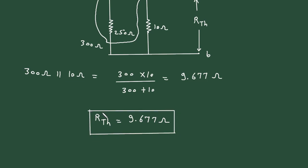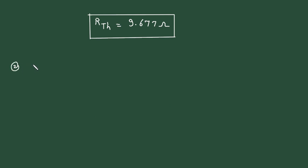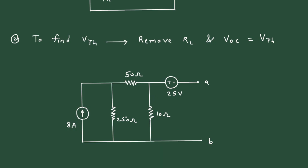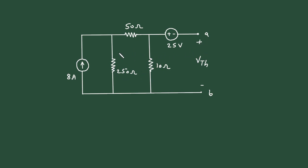Step number 2: we have to find the value of open circuit voltage Vth. To find Vth, we again remove RL. VOC equals Vth, so VOC is the open circuit voltage. We will find Vth by using the source transformation technique, converting the current source into its equivalent voltage source.